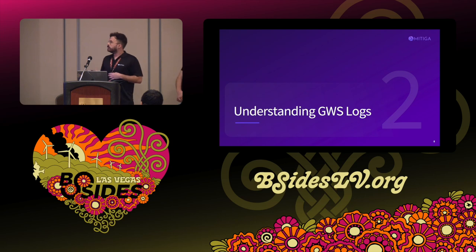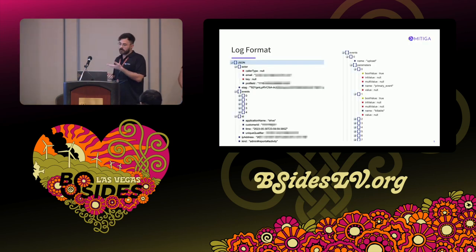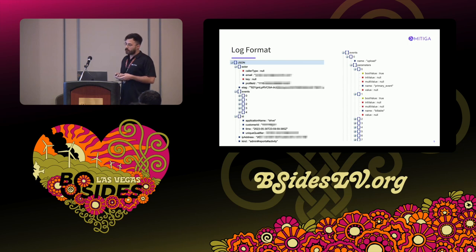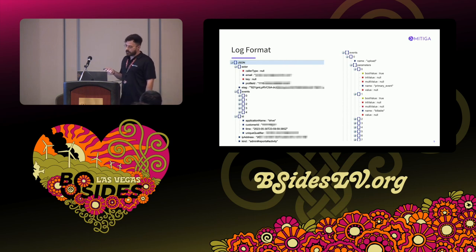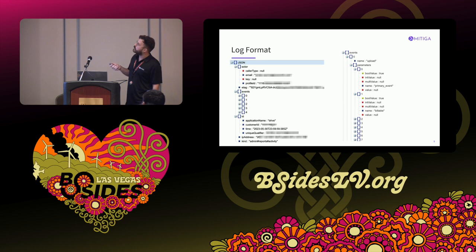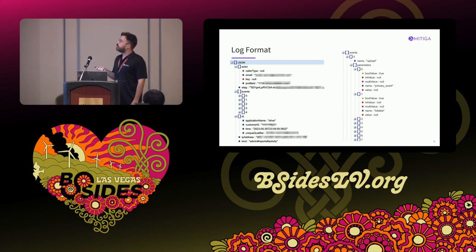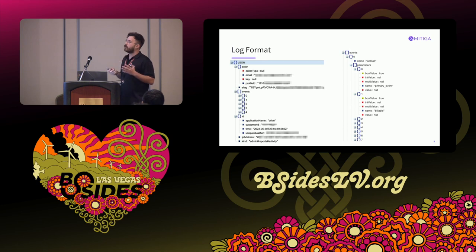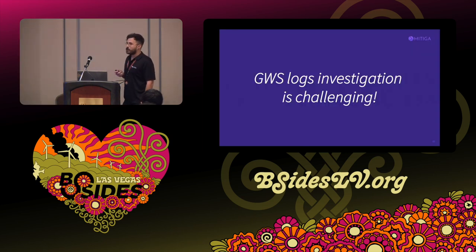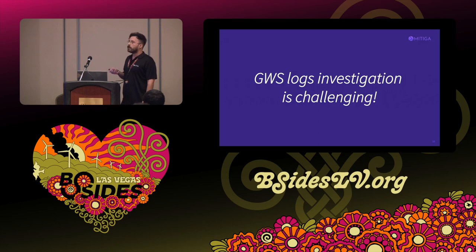Let's talk about the log structure. On the left-hand side, you can see a typical log record from Google Drive. We can see the caller (the email of the entity that performed the action), the IP address, the application name, and more. There is also a list of dictionaries called events, expanded on the right-hand side — for example, an event of type upload and its parameters. The parameters are another list of dictionaries representing the parameters of each call, so each log entry contains two nested lists of dictionaries, which is quite challenging.